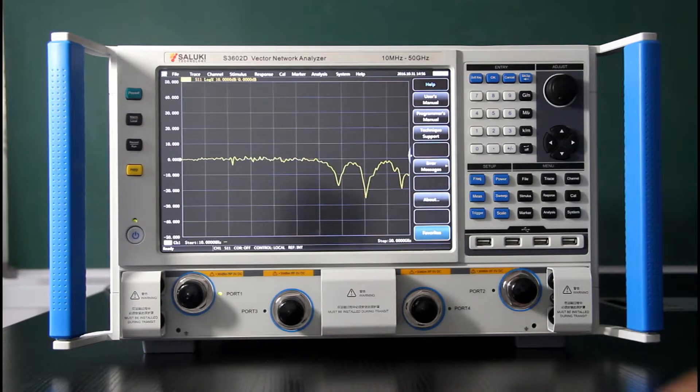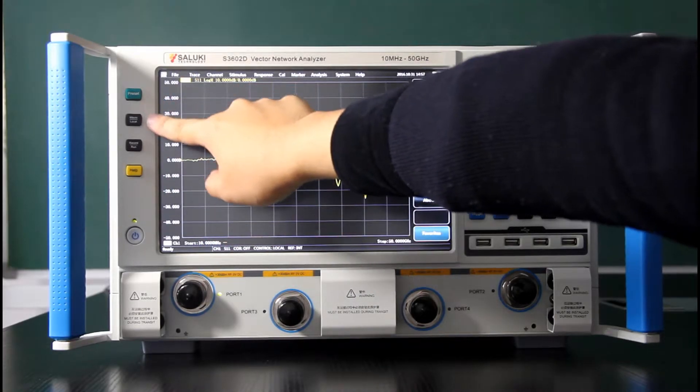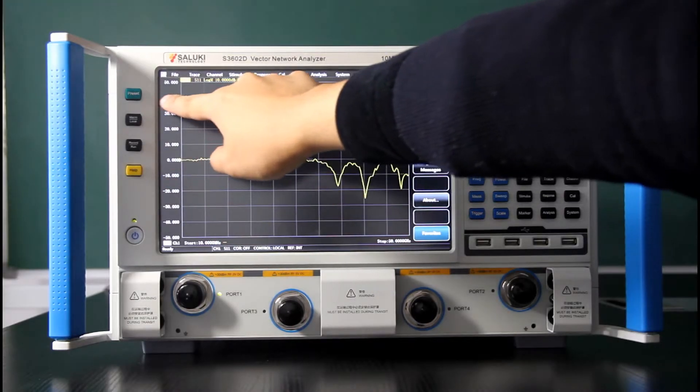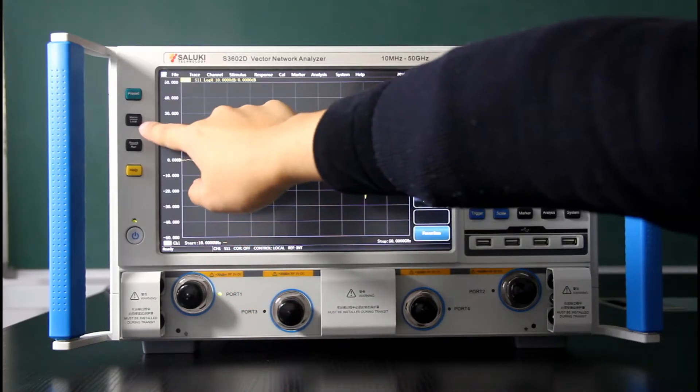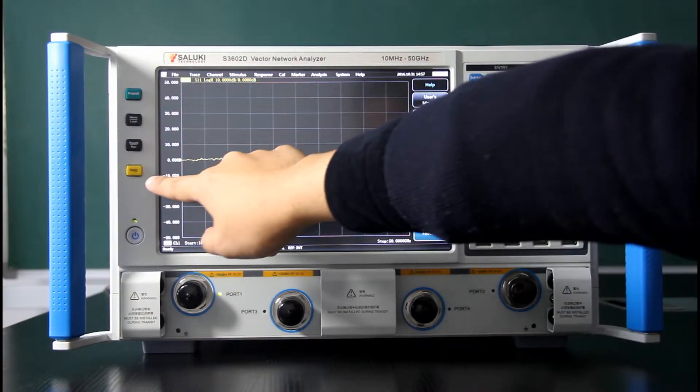First, on the left, there are a column of keys here. There are preset, macro, record and help. Preset will reset this instrument to the default status. And macro to use some macros. Record and run to record and help.